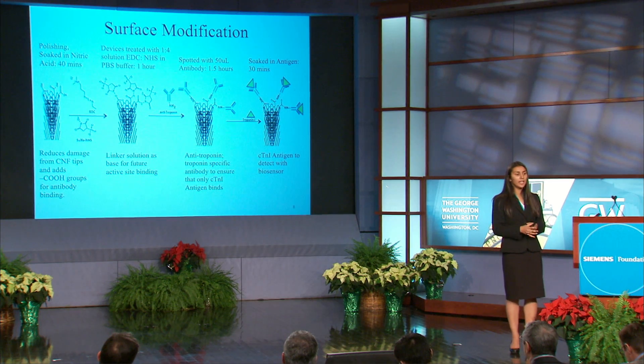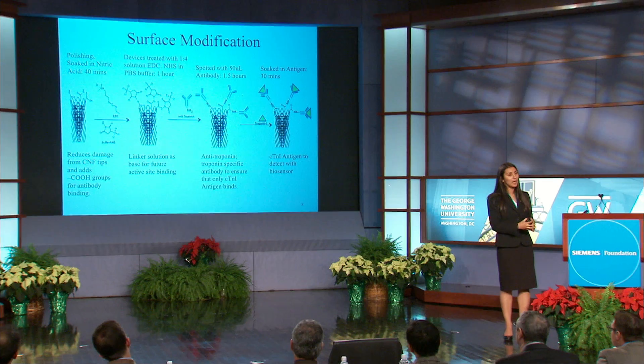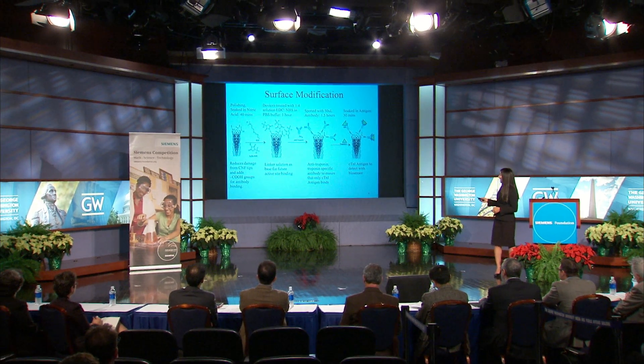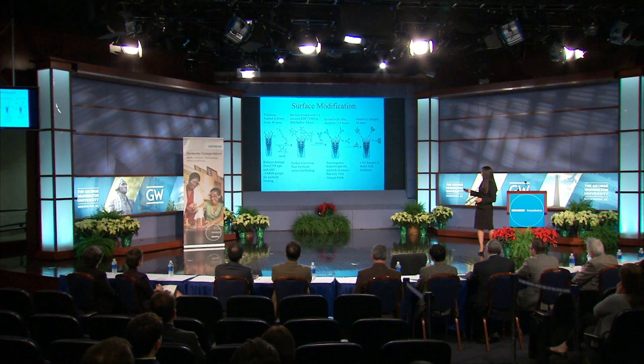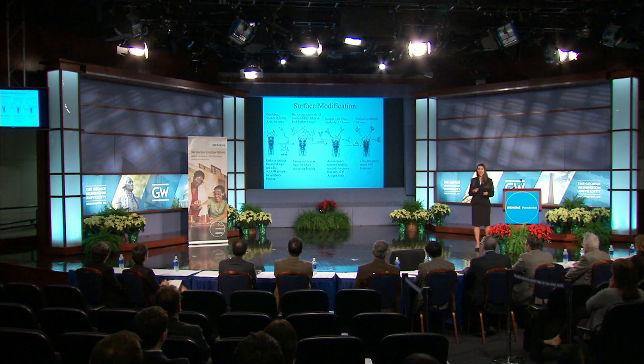The crux of this project is really in the surface modification of the carbon nanofibers. By changing the topography of the fibers, I can manipulate the device to test for a range of proteins or different illnesses. I started with the bare carbon nanofiber electrode, soaked it in nitric acid to reduce damage and cleanse the device, then attached an EDC-NHS linker solution followed by a specific antibody. Using a specific antibody ensures a specific antibody-antigen pair, providing very specific detection with a very low risk of false positives.